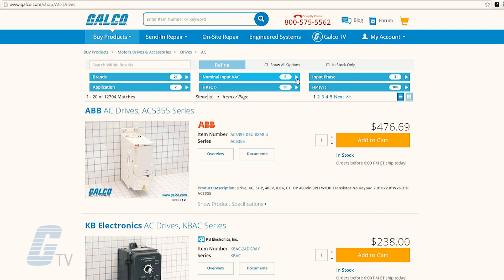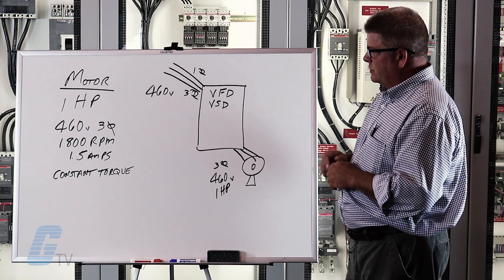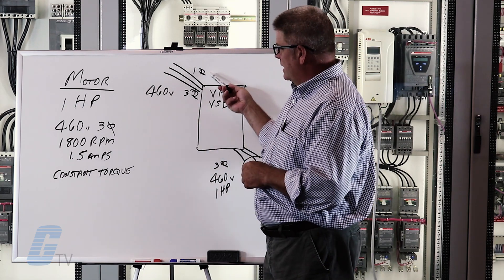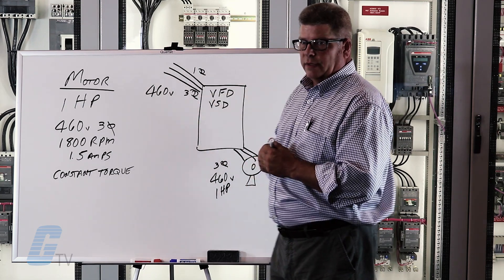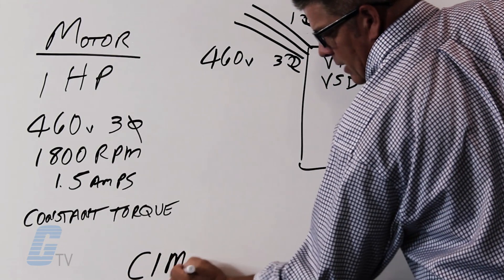So by taking this motor data and using a parametric search that is available on galco.com we can select a drive that fits our requirements today. Parametric search allows us to type in the horsepower and the motor requirements. It also allows us to type in our supply requirements. So today by using that information I was able to select the Yaskawa drive.